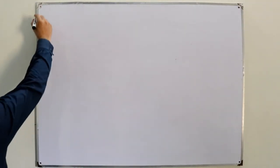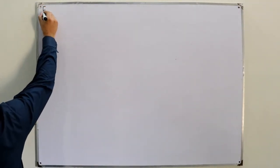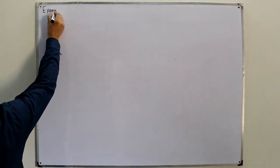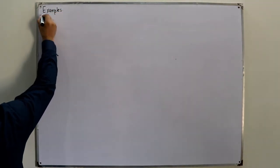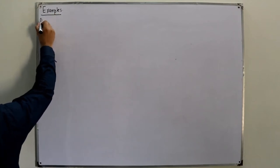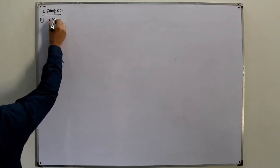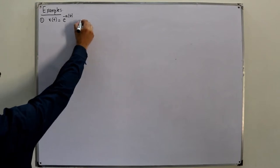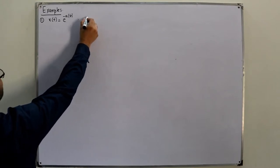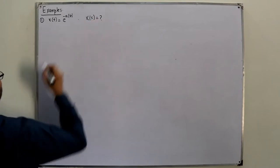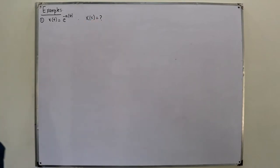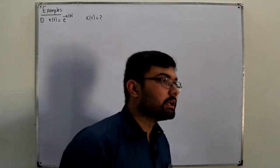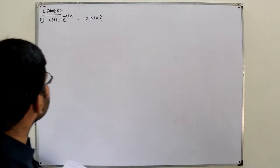We will see five examples in this video, and this would be the very last video on examples. The first signal I take is x(t) = e^(-a|t|), and the corresponding X(s), the Laplace transform, is unknown.